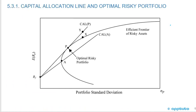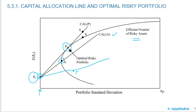The capital allocation line and optimal risky portfolio. A capital allocation line is a straight line drawn from the risk-free asset. The risk-free asset is on the y-axis because there's no standard deviation — no volatility to the risk-free asset in theory. A capital allocation line is a straight line from the risk-free asset to any portfolio. There is a special point, P, where a straight line from the risk-free asset is just tangent to the efficient frontier of risky assets — we call that the optimal risky portfolio. It has the highest Sharpe ratio — the best return-to-risk ratio.